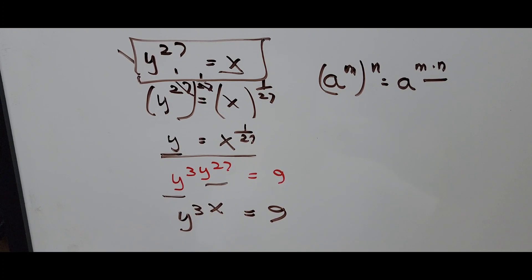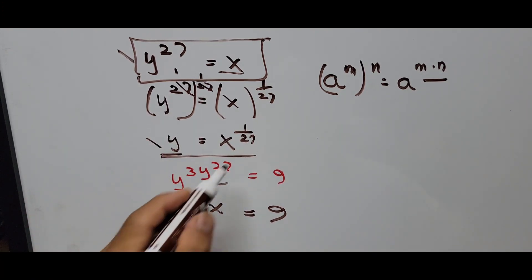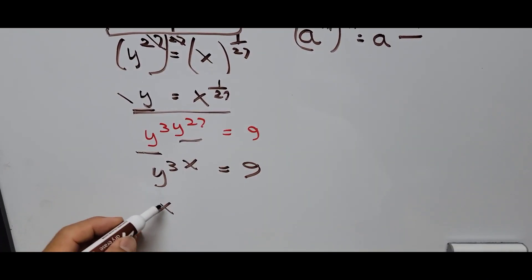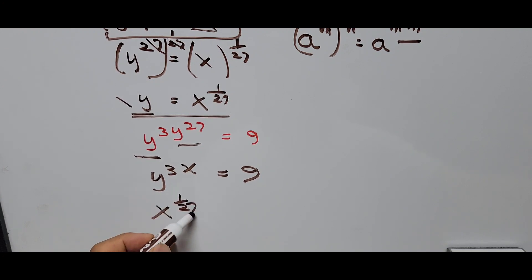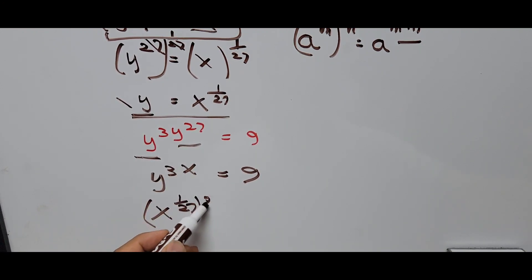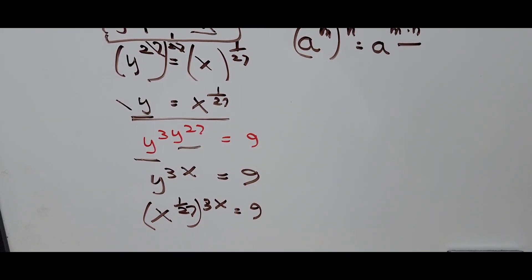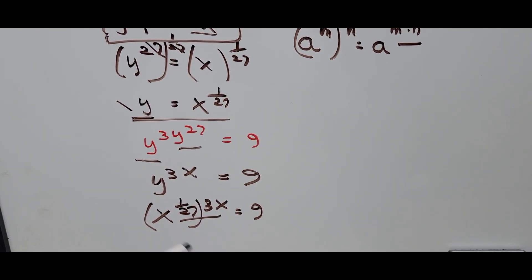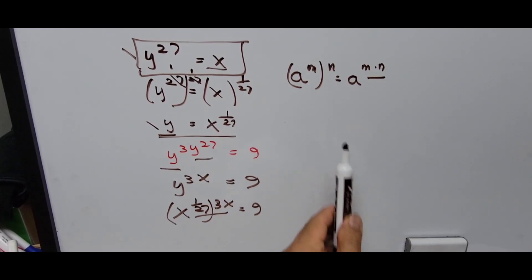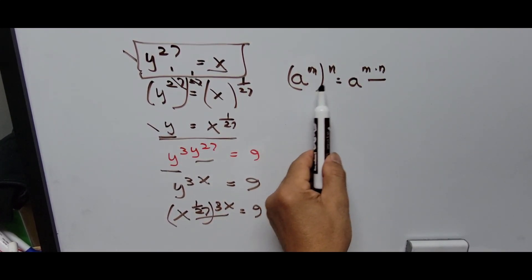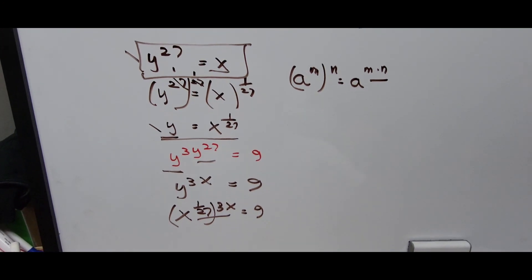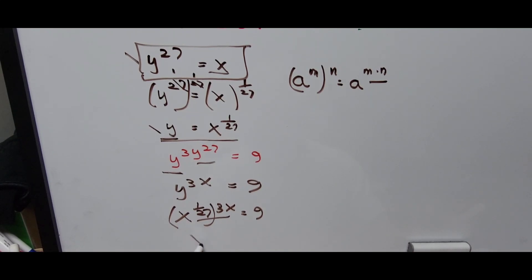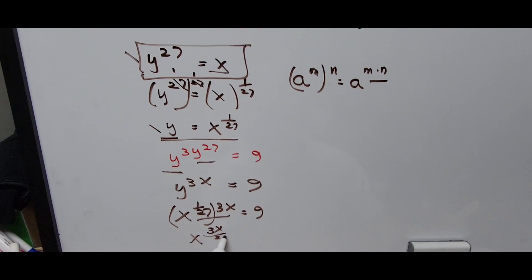Substituting the second y as x raised to 1 over 27, and the exponent becomes 3x, so we have x raised to 1 over 27 multiplied by the exponent 3x equals 9. Applying the power rule — 1 over 27 times 3x — this becomes x raised to 3x divided by 27, equals 9.